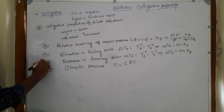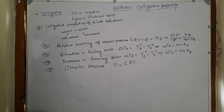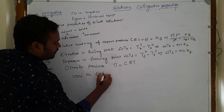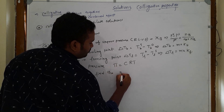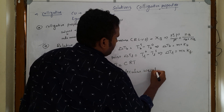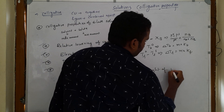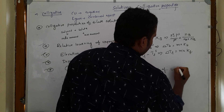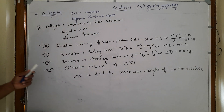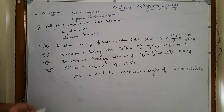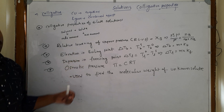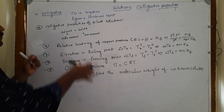These are the four colligative properties. The main purpose of colligative properties is to find the molecular weight of an unknown solute. One colligative property is related to another, and I will explain each point in detail.